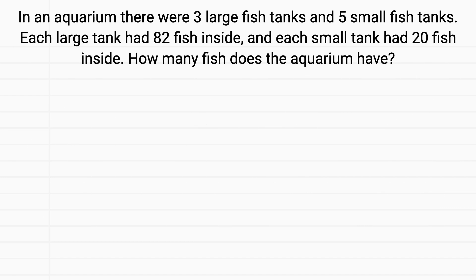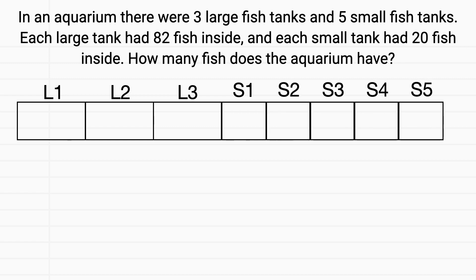So in this problem, we have large fish tanks. I'll label them large tank 1, large tank 2, and 3. Then we have small fish tanks. I'll label them S1 for small tank 1. Here are my 5 small fish tanks.